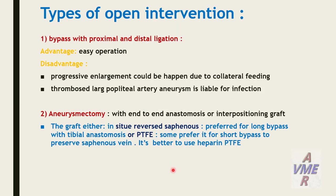Types of open intervention. Bypass with proximal and distal ligation — advantage: easy operation; disadvantage: progressive enlargement could occur due to collateral feeding. From large popliteal artery aneurysm, liable for infection. Aneurysectomy with end-to-end anastomosis or interposition graft.